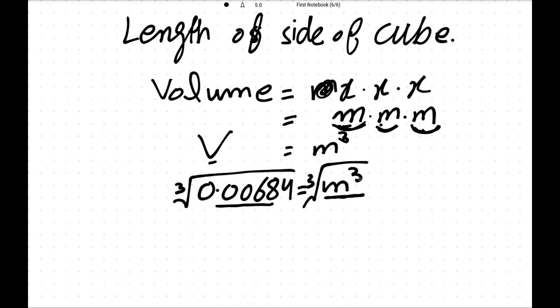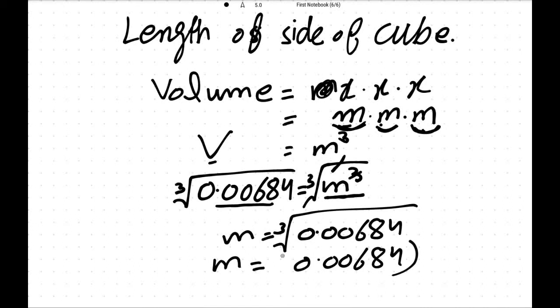Cube root cancels, so meter is equal to cube root of 0.00684. Solve this with your calculator. The answer is 0.19 meter. So this is the required answer, thank you so much.